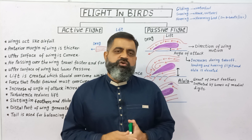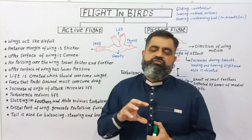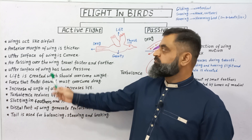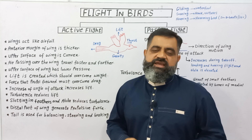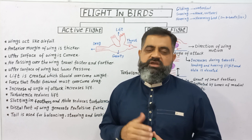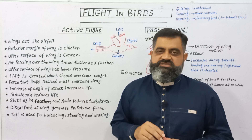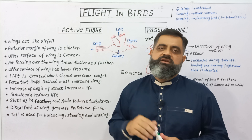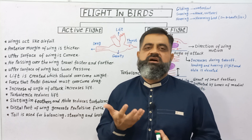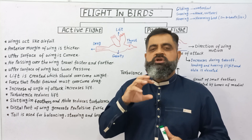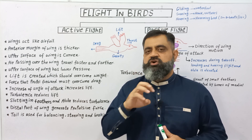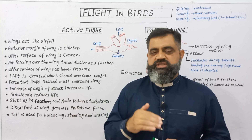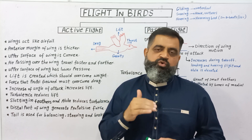First of all, I have arranged a list of key points which we are going to discuss one by one. The wings of birds act like an airfoil. An airfoil is a thin surface, like a leaf, which can fly in the air easily, just like the wings of an aeroplane. So the wings of birds are modified in the form of an airfoil, which helps them to fly in the air more easily.